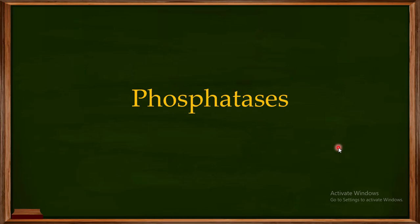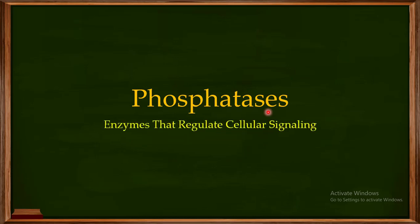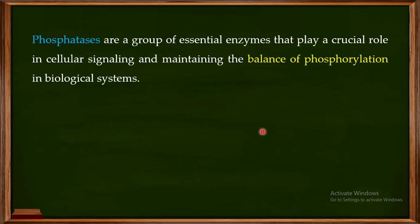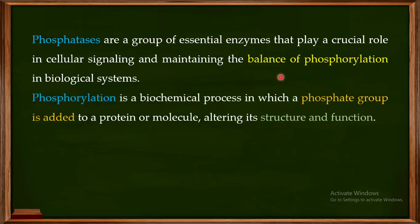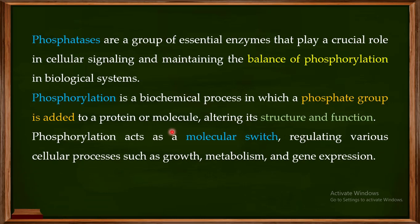Welcome back to this next video — this is Part 2 on the phosphatases. In Part 1, I told you that phosphatases are enzymes important for the regulation of cellular signaling, and they are very important in maintaining a balance of phosphorylation in biological systems. Phosphorylation is a biochemical process in which you add a phosphate group to a protein or molecule, altering their structure and function. This phosphorylation acts as a molecular switch, regulating processes like growth, metabolism, and gene expression.